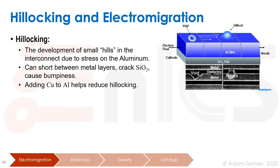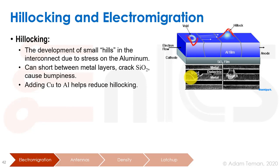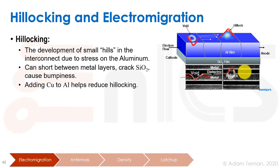Hillocking is when little hills or hillocks are created in a conductor. In this picture we have an aluminum film, and there's stress on the aluminum that can cause these little bumps, or it can cause depressions called voids. A void can be so deep that it breaks through most or all of the metal. If it breaks through completely it causes an open circuit; if it only partially breaks through it raises the resistance of the conductor.